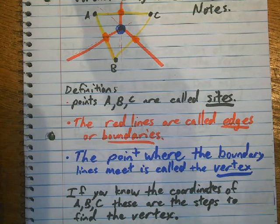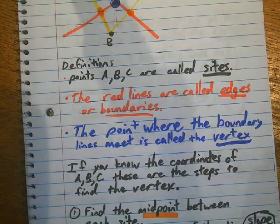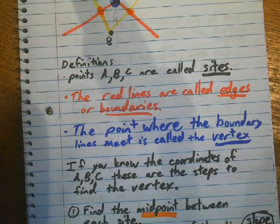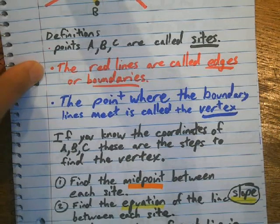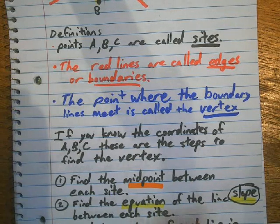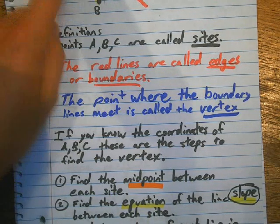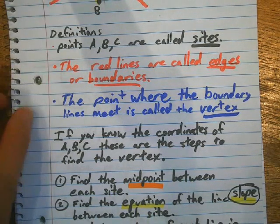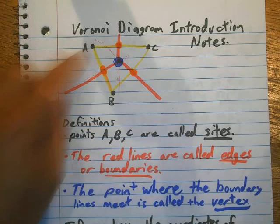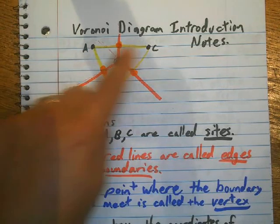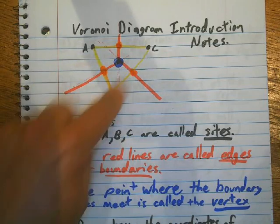After we get the midpoints, I need to find the slopes between the sites. So, I'll need to find the slope of this yellow line, the slope of this line, and the slope of this line.